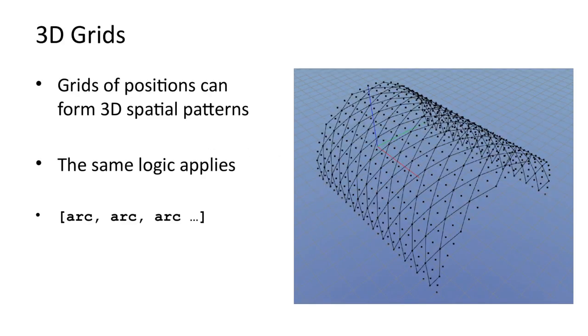In this example, the grid is no longer planar. The rows of positions now define arcs. The list of positions has the same structure. It is still a list of rows of positions. As a result, the diagonals can be generated in exactly the same way as before.